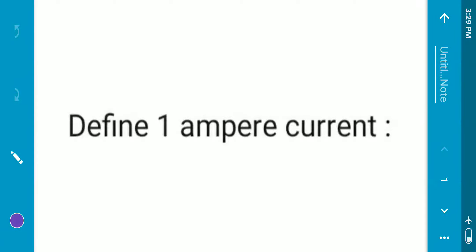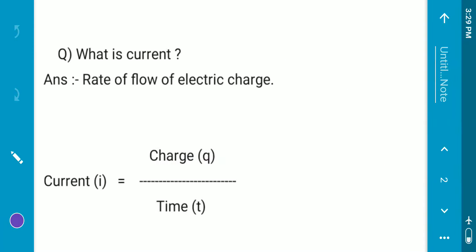Hello students, welcome to another video of this channel. Today we will discuss the definition of one ampere of current. Now at first we should know what is the current. Current means the rate of flow of electric charge.